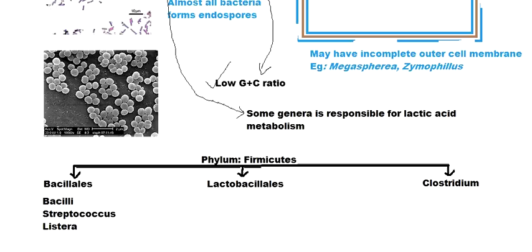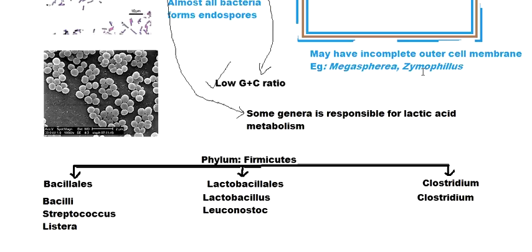There are many important genera in the class Bacillales, including Bacillus, Staphylococcus, and Listeria. There are actually many more genera in this phylum Firmicutes — 273 genera in total — but some important ones are worth knowing. In Lactobacillales we find Lactobacillus and Leuconostoc, and in Clostridia we have genera like Megasphaera, Zymophilus, Heliobacterium (which can do photosynthesis), and most importantly Clostridium.